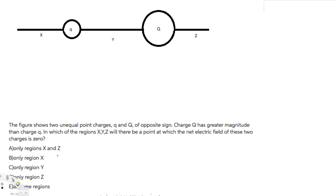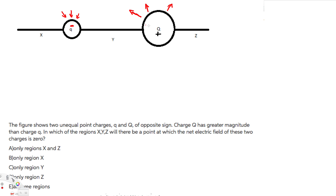Let's analyze which location is going to give us the net electric field zero. Let's assume this charge is positive and this one is negative. For a positive charge, the electric field direction is always away from it. If it's negative, the field goes toward it. So these are the electric field directions for negative and positive charges.